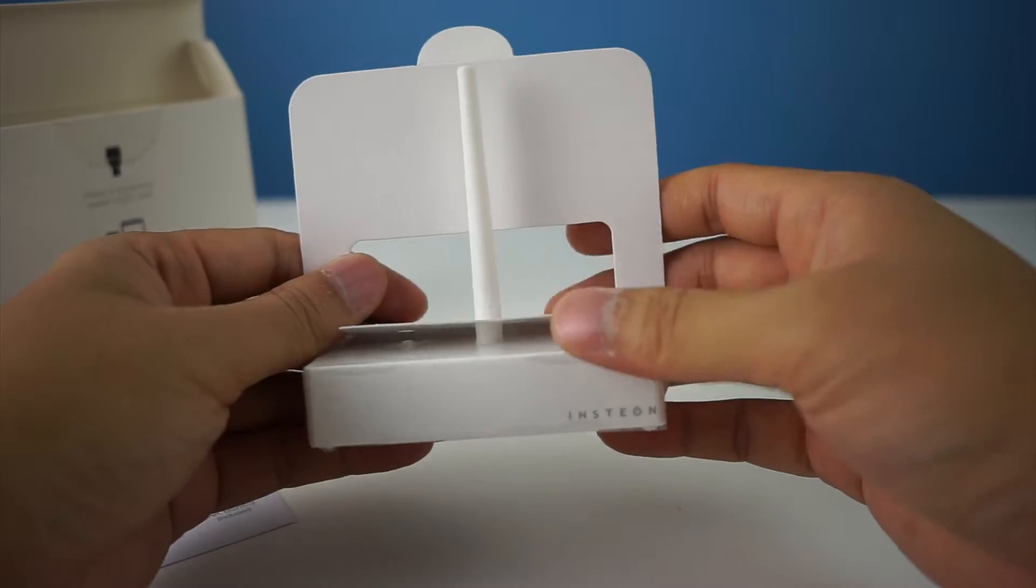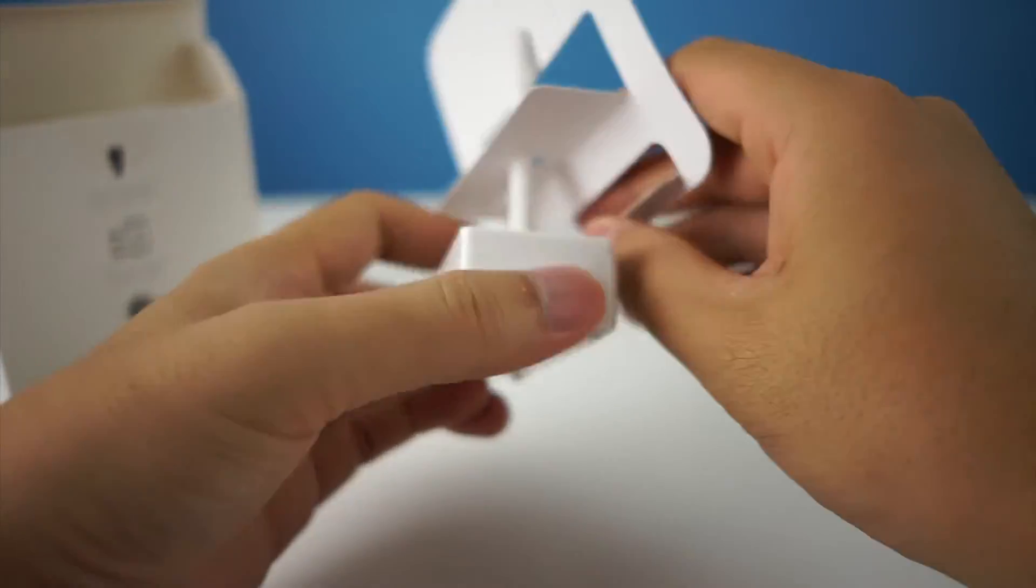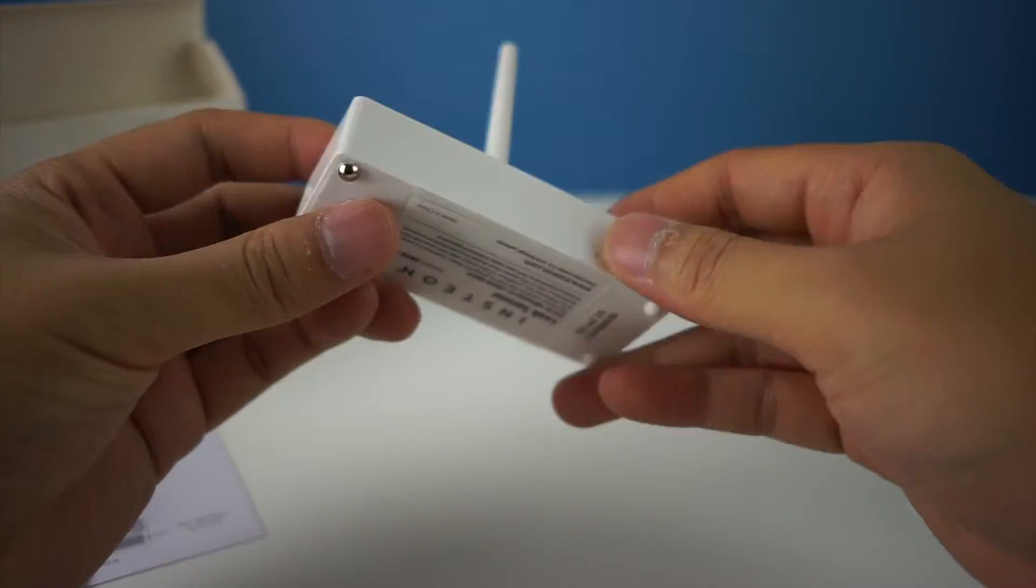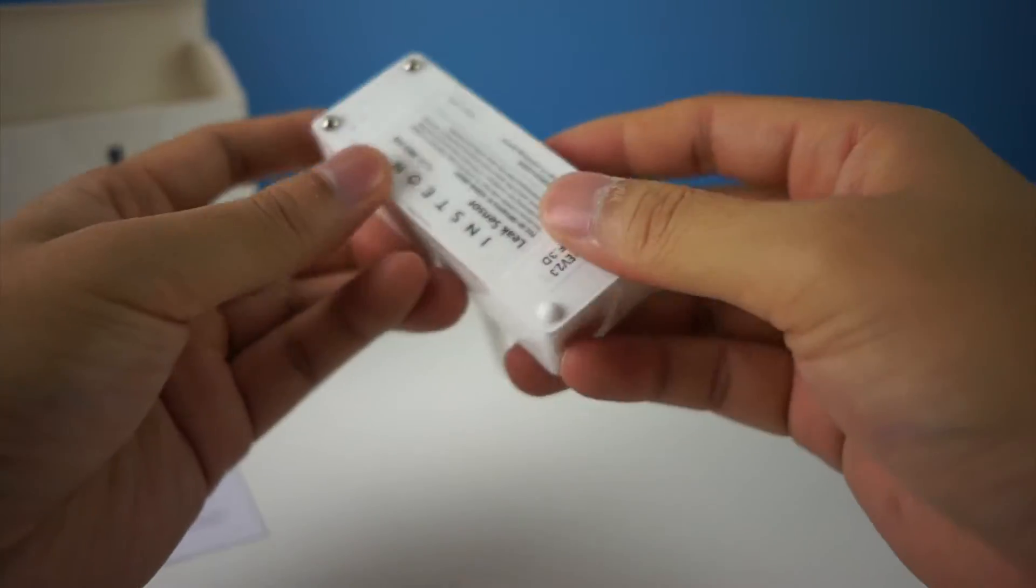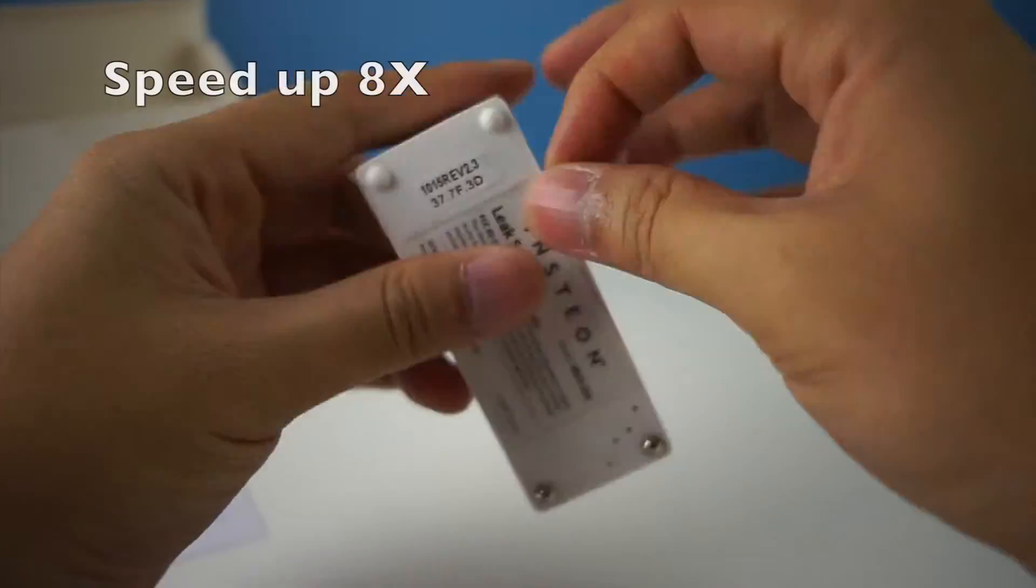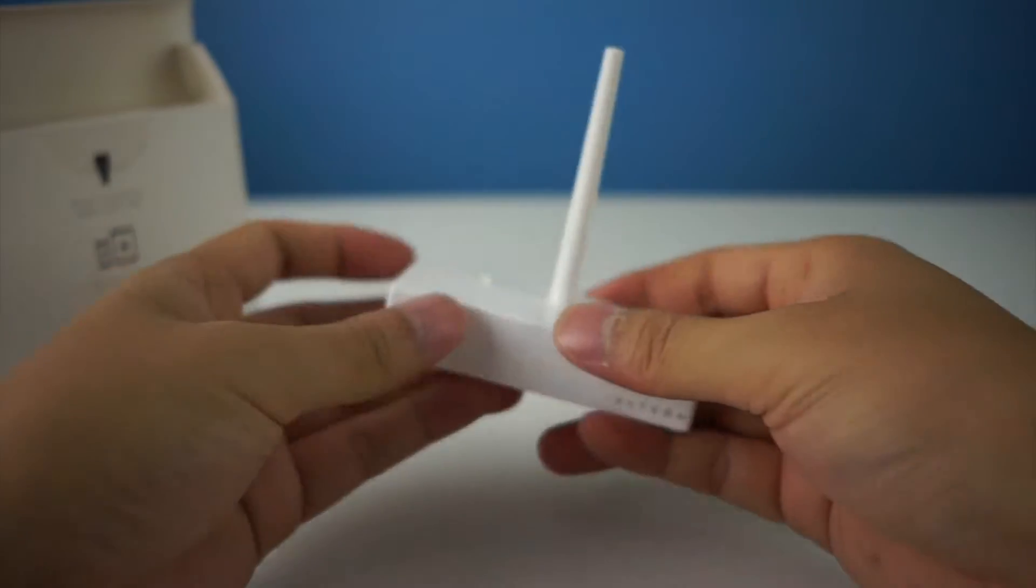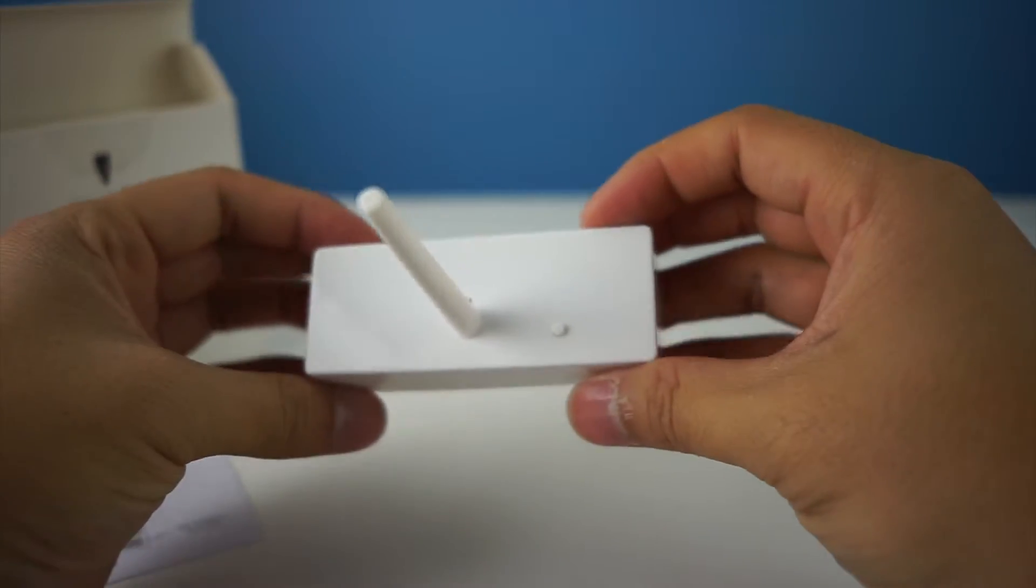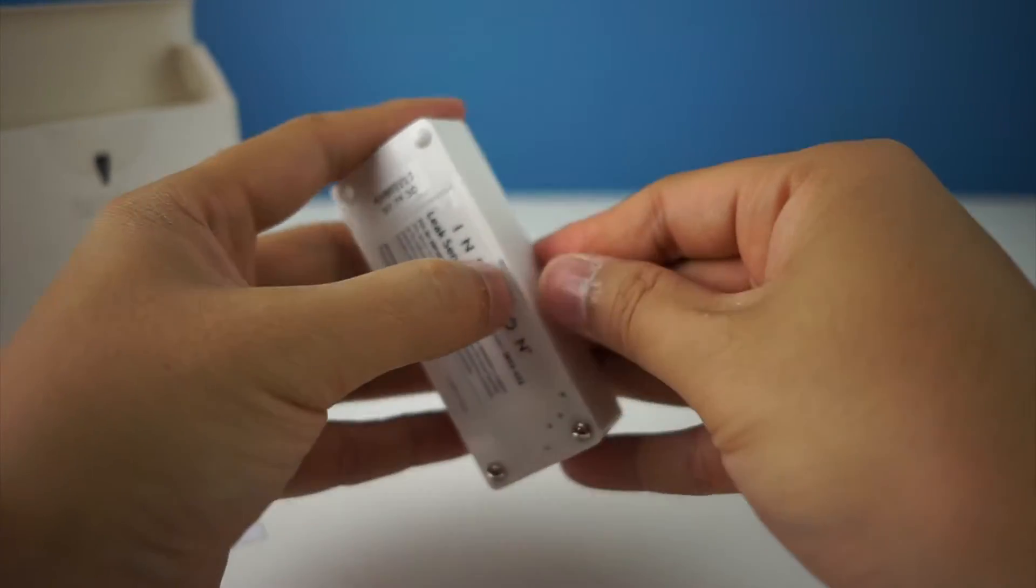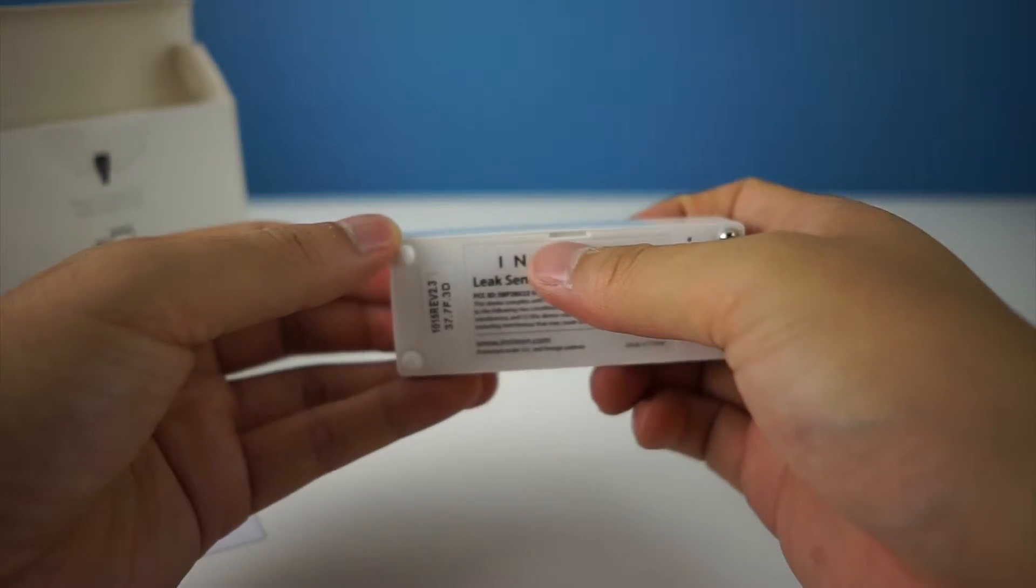So here's the device. It's wrapped in some plastic. Okay, so it's just the antenna and this is where you pry open the battery when you need to change it.